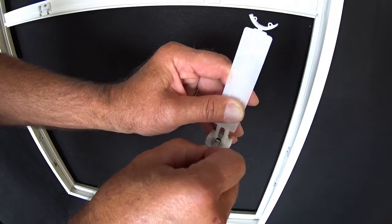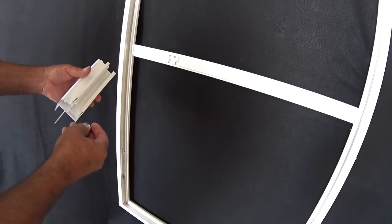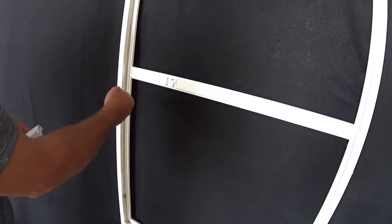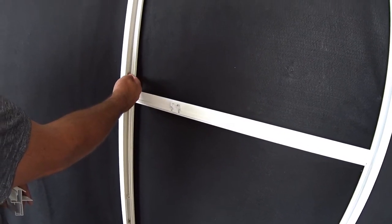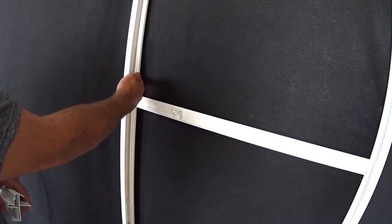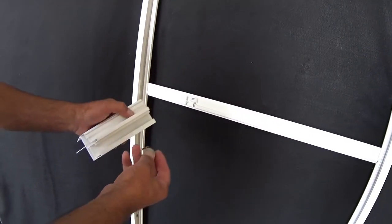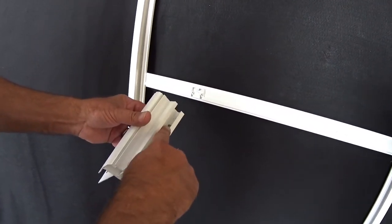Now before I show you how to remove this SFI constant force balance, I want to explain to you how the spring is fastened to the jam. Unlike other balances, the spring end will be attached to a mounting block that would be visible in the jam.